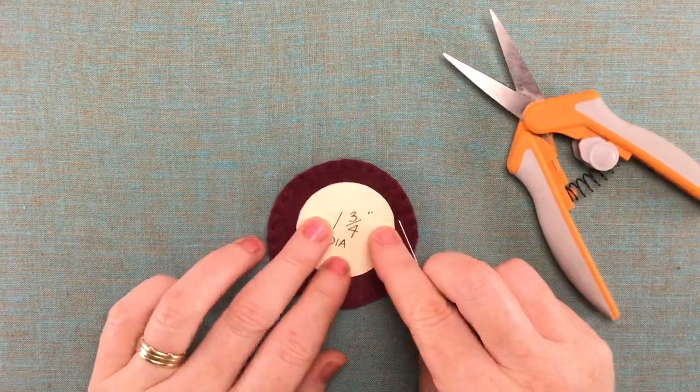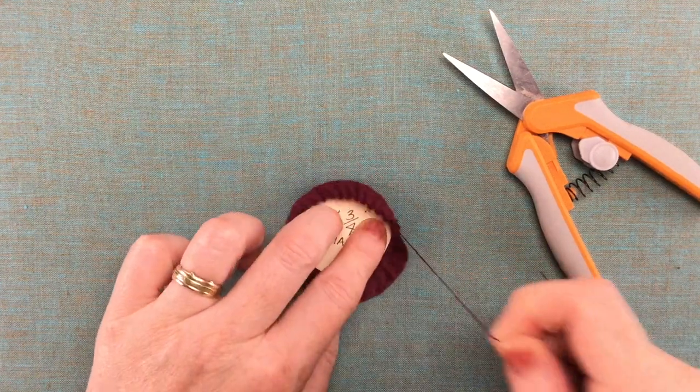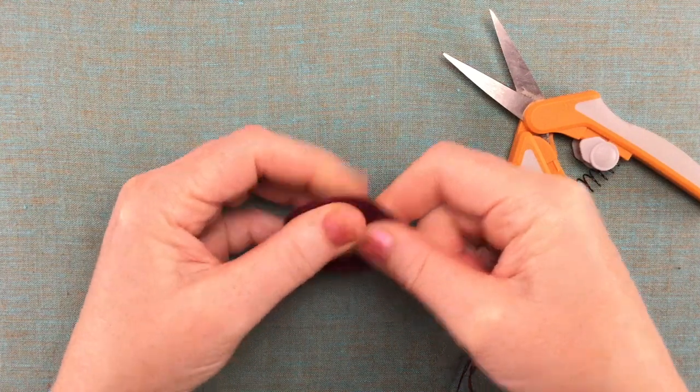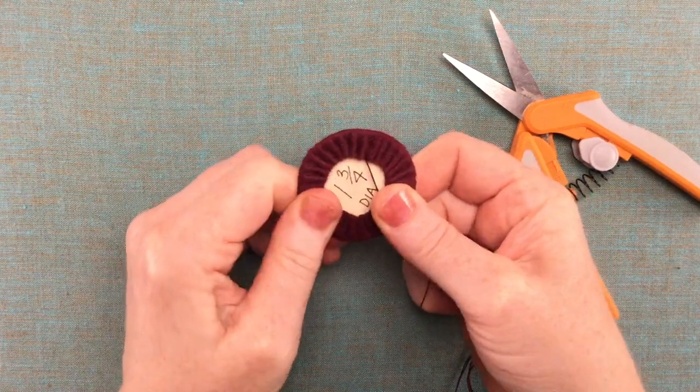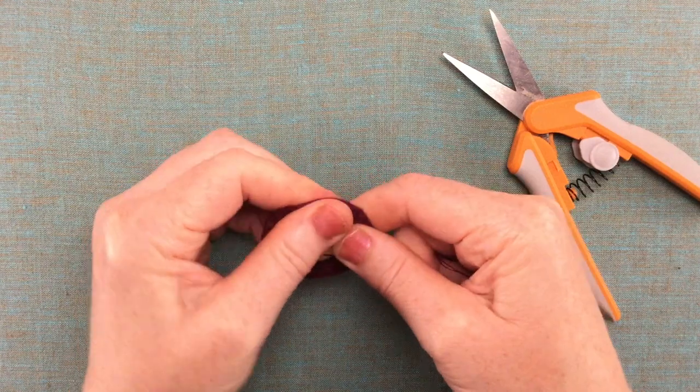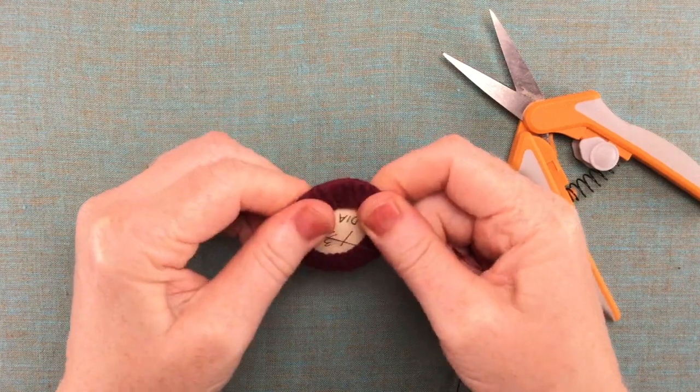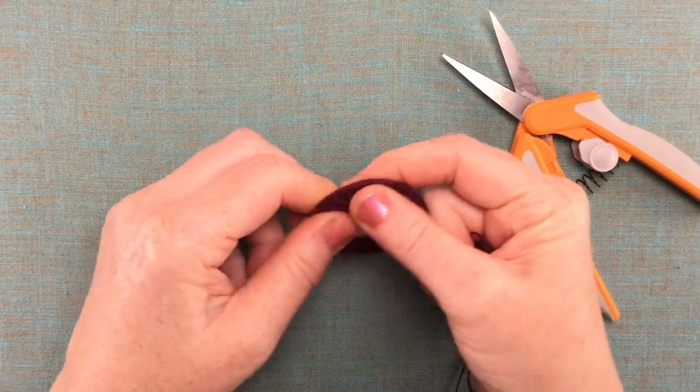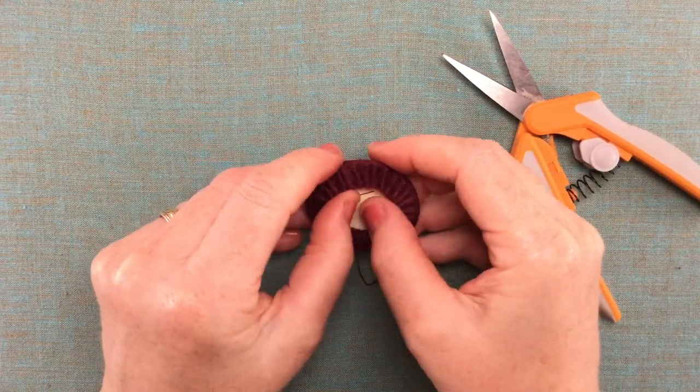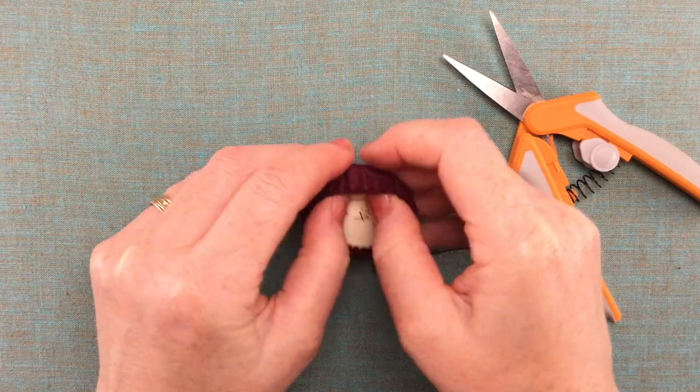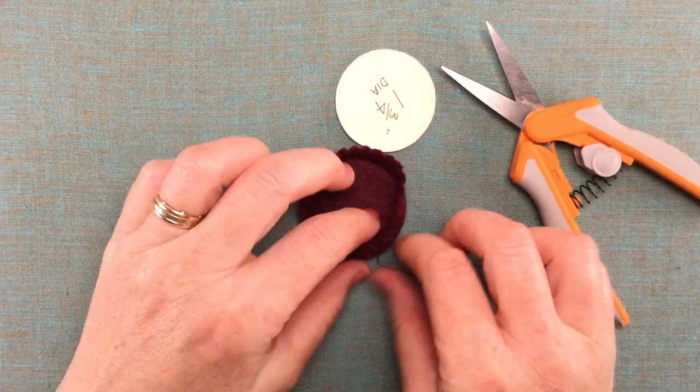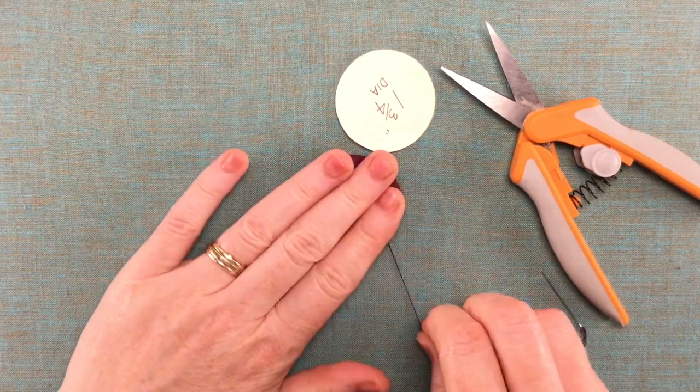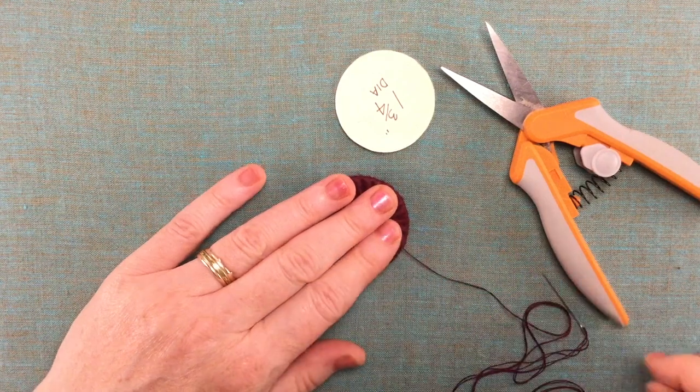Okay here we go. So now we're going to put our little one and three quarter inch circle right in the center and I'm just kind of finger pressing this around the circle because we want to take that circle out so I don't want to completely flatten it with an iron because I still want to see the gathers on the underside of our little hat there.